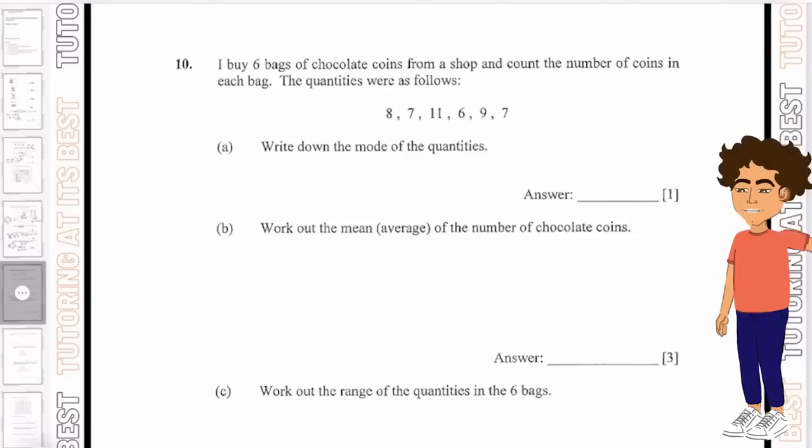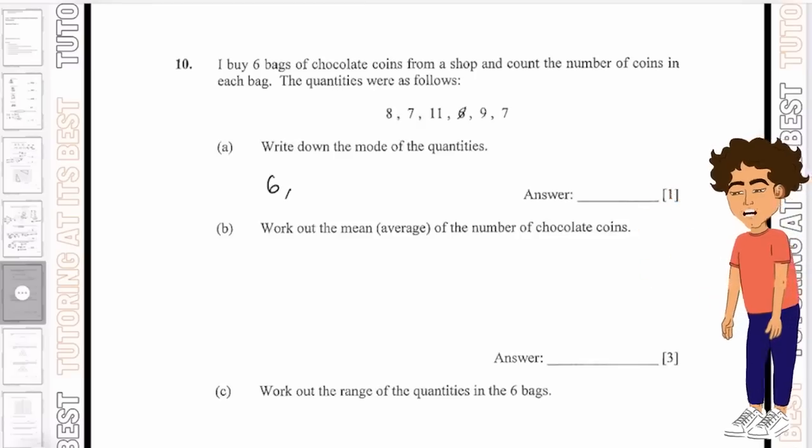Now write down the mode of the quantities. The first thing we're going to do is order the numbers and then write down the one that is most common. So we have 6, we have 7, we have 7 again, we have 8, 9 and 11.